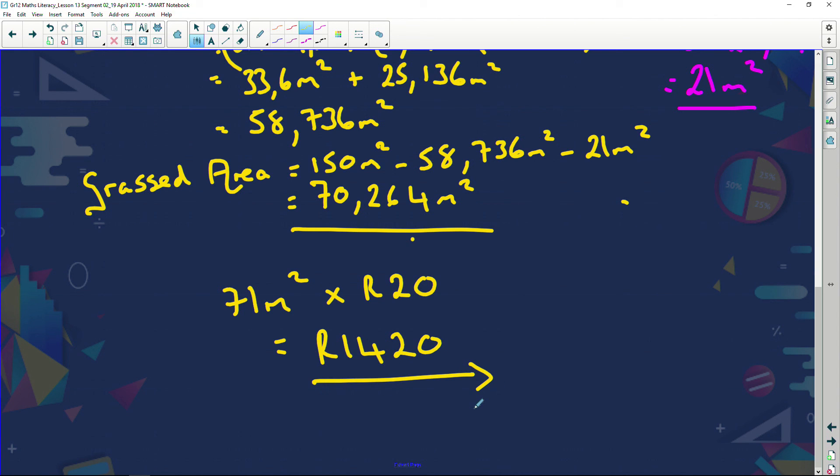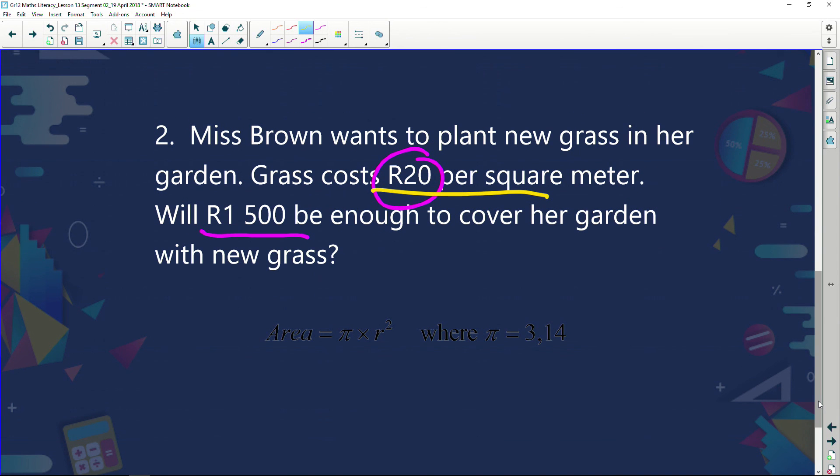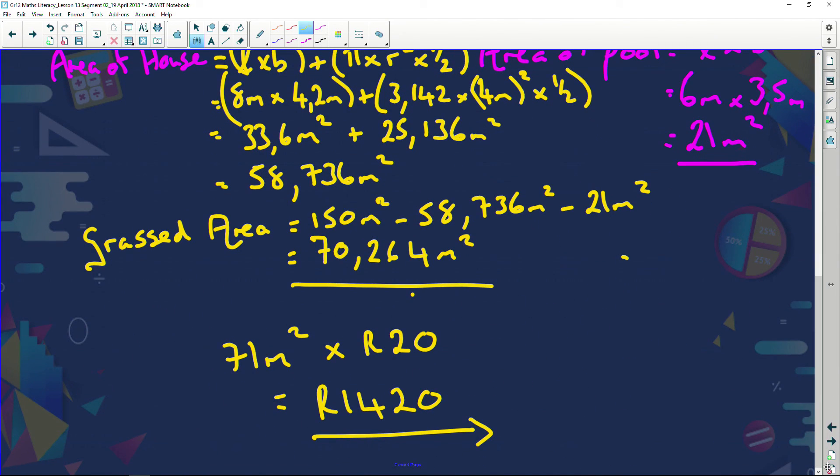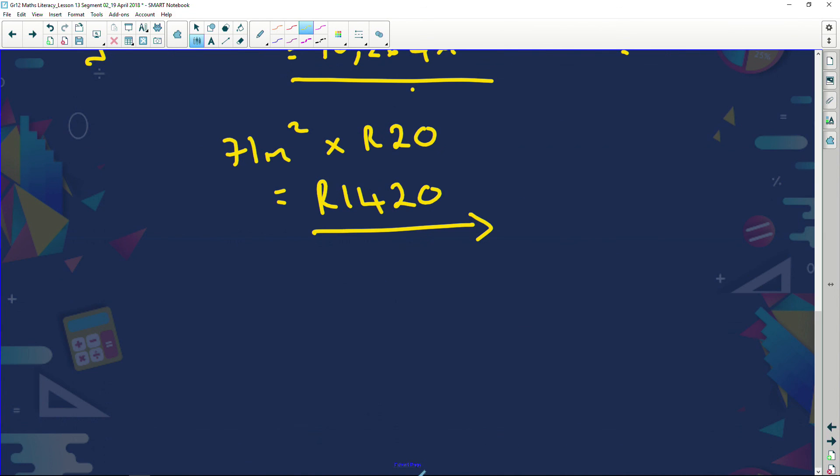Now folks, have we answered the question? What was the question? The question was, and we'll go all the way down here to read it, will 1,500 rand be enough to cover her garden with new grass? What have we done? We have calculated it, and we've said it's got to be 1,420. So we've got to answer the question. And will 1,500 rand be enough? Therefore, 1,500 rand will be enough to grass her yard. Got to end with what the question has actually asked us.